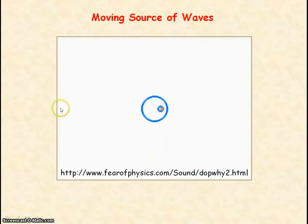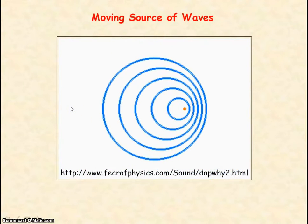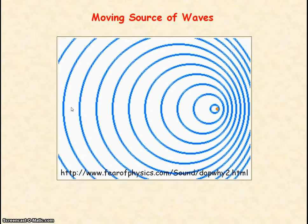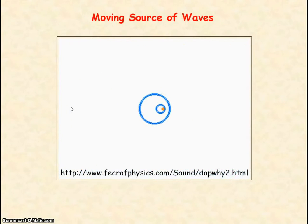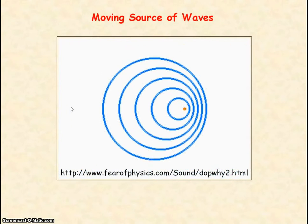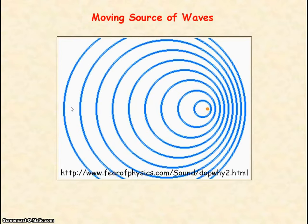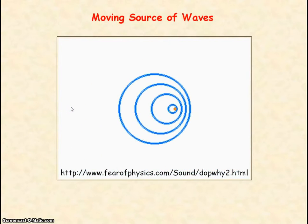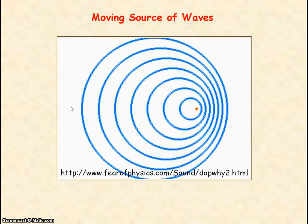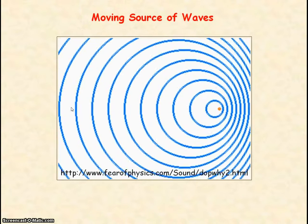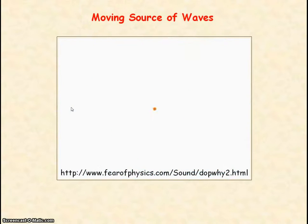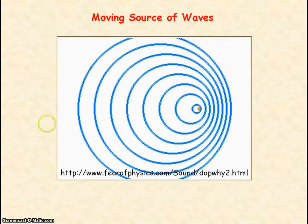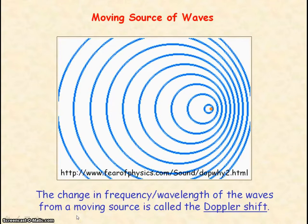However, for an observer who is behind the point source of waves, it will detect a lower frequency, and that's because the point source is moving away from the observer and so it takes a longer time for the observer to receive each wave front.